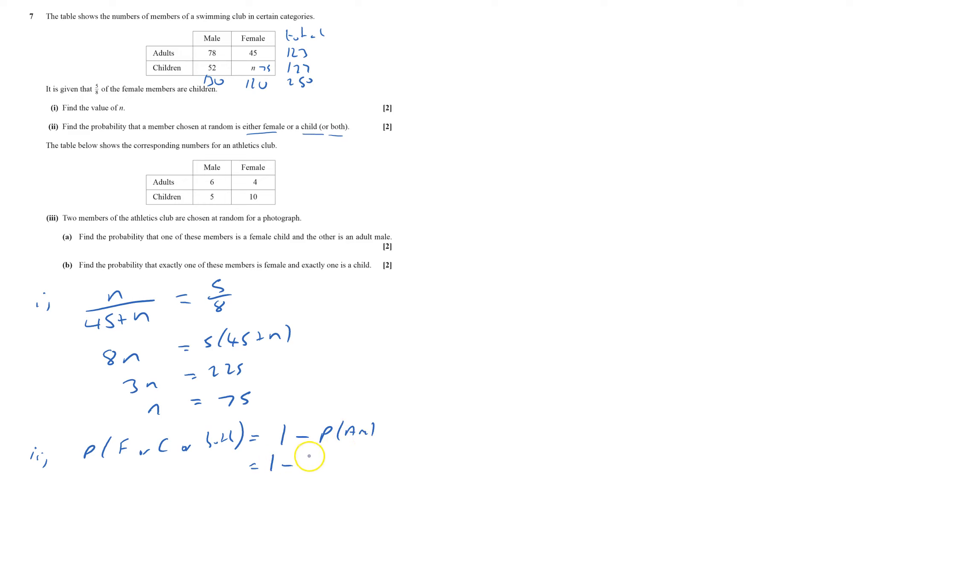So probability female or child or both equals 1 minus probability of adult male, which is 1 minus, that would be 78, I did need to work that out, out of 250.